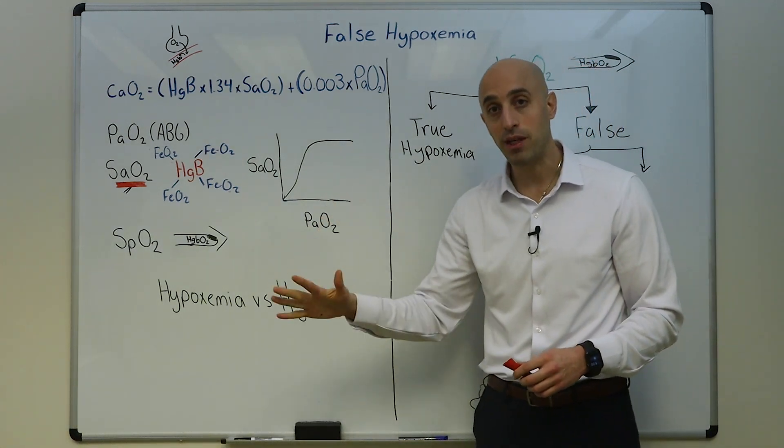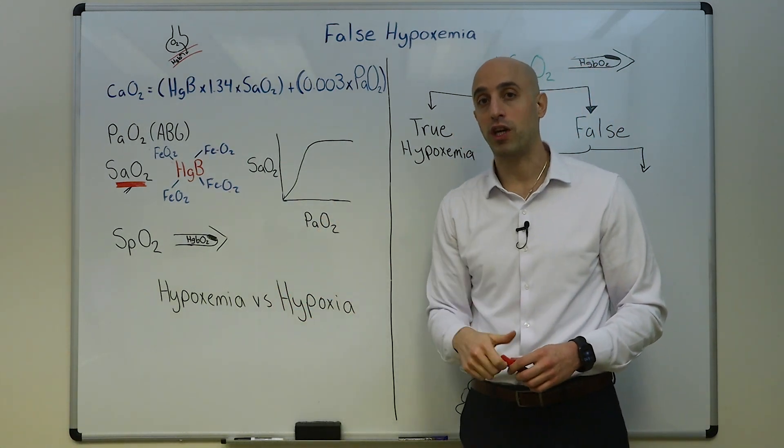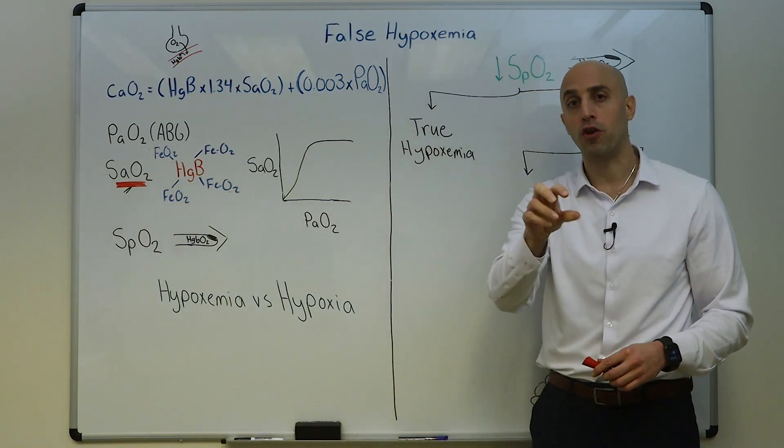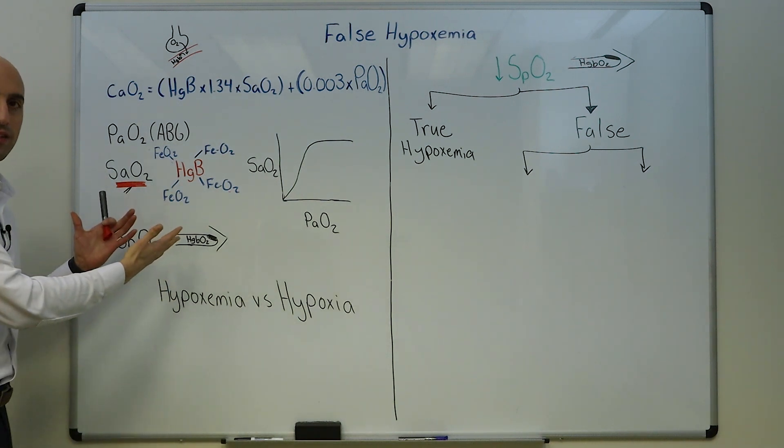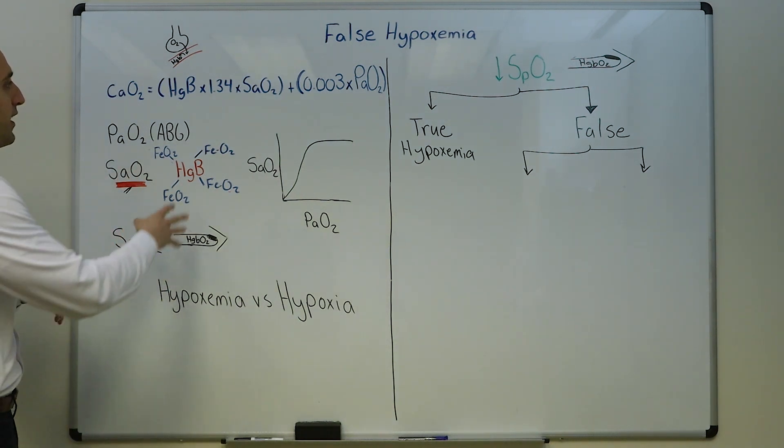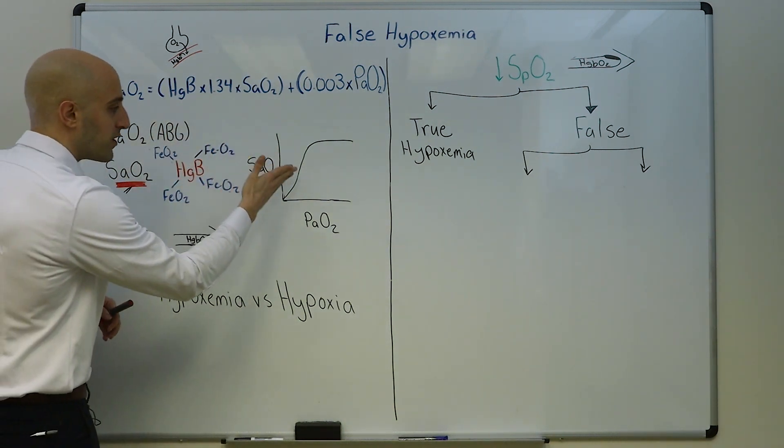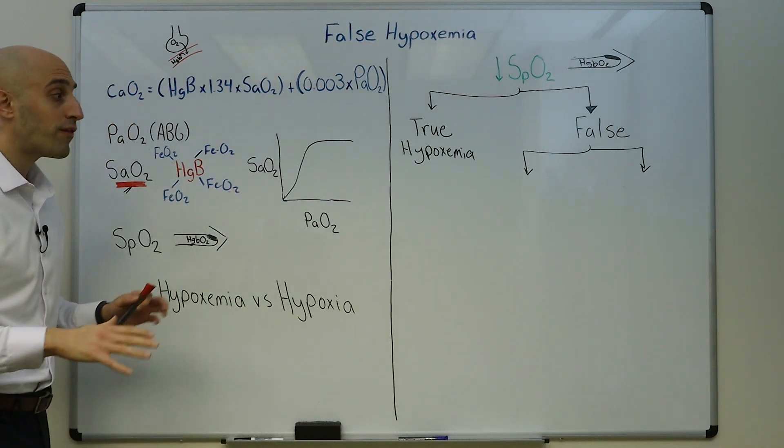The blood that's being delivered has a normal PaO2 but the cells are just not seeing enough oxygen. This can also happen in the setting of anemia and abnormal hemoglobin molecule. We'll discuss both of those shortly.